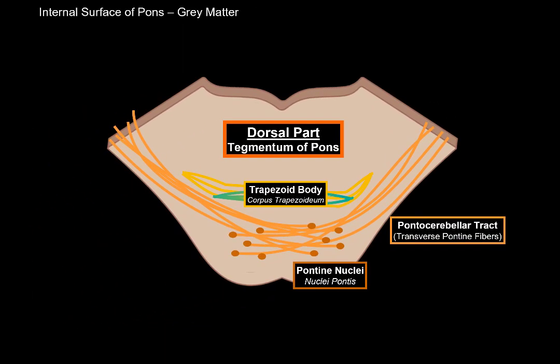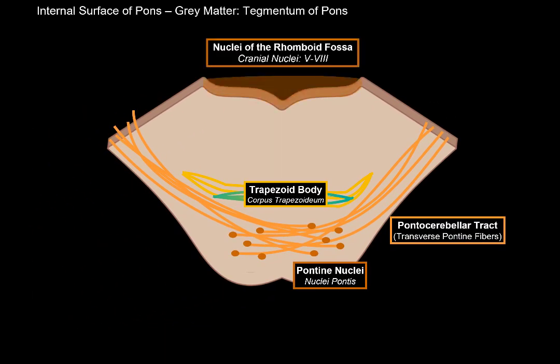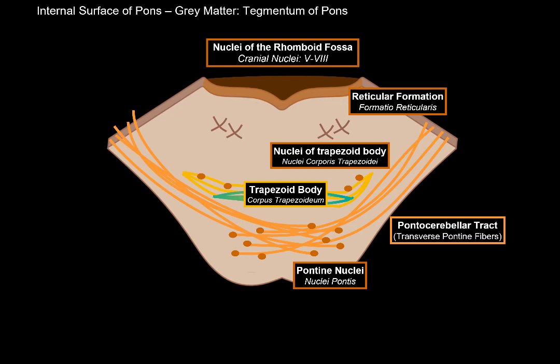The grey matter of the tegmentum consists of nuclei belonging to cranial nerves 6 to 8 in the rhomboid fossa, which we'll cover in a separate video. We also see the reticular formation, present along all parts of the brainstem. Between the fibers of the trapezoid body, you'll find small nuclei called the nuclei of the trapezoid body, with which some fibers synapse.